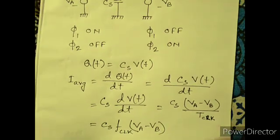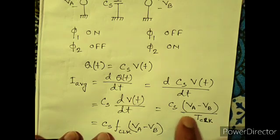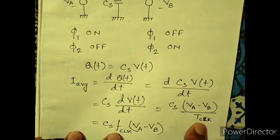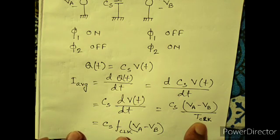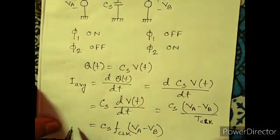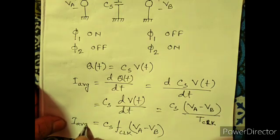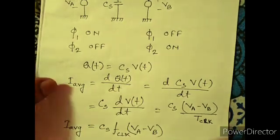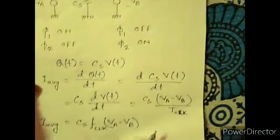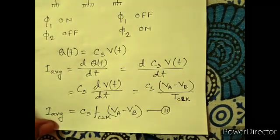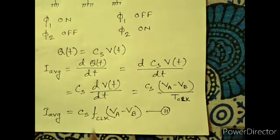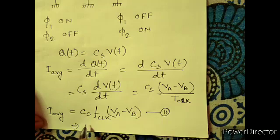We know 1 by T is F, where F is clock frequency. So we can write 1 by T equals F, the clock frequency. Therefore CS times F times (VA minus VB) equals I_average.